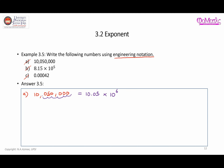We can verify: starting with 10.05 times 10 to the power of 6, we move the decimal point six places to the right, filling empty spaces with zeros, and we get back the original large number. So 10.05 times 10⁶ is confirmed as the correct engineering notation.